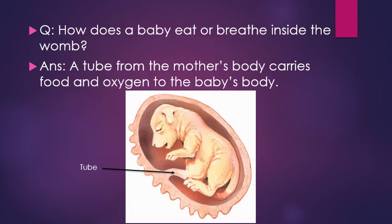Now the question arises: how does a baby eat or breathe inside the womb? A tube from the mother's body carries food and oxygen to the baby's body. So the baby survives inside the womb by taking food and oxygen from the mother's body. In this picture you can see the special tube through which the baby takes in oxygen and food from the mother's body.